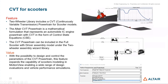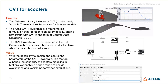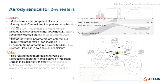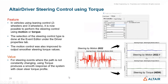The two-wheeler library now adds a CVT transmission — continuously variable transmission — for scooter models. This powertrain is listed under IC engine powertrain with CVT and is an analytical model in the form of a control state equation. Another update to the two-wheelers library is the ability to include aerodynamic forces, with aerodynamic coefficients provided in a TeamOrbit .aae file, adding more fidelity to your model.